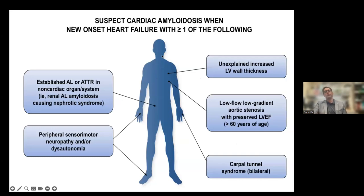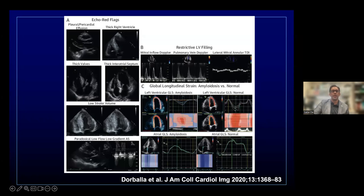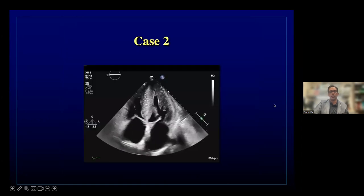We suspect amyloid based on the CCS document when the patient has neuropathies, but I want to focus on unexplained LV wall thickness and low flow, low gradient aortic stenosis in a patient with preserved ejection fraction. Other echo findings include a small pericardial effusion, right ventricular thickening, valve thickening, thickening of the interatrial septum, low stroke volume, and abnormalities suggesting restrictive filling. We'll do a diastolic function assessment and look at global longitudinal strain.